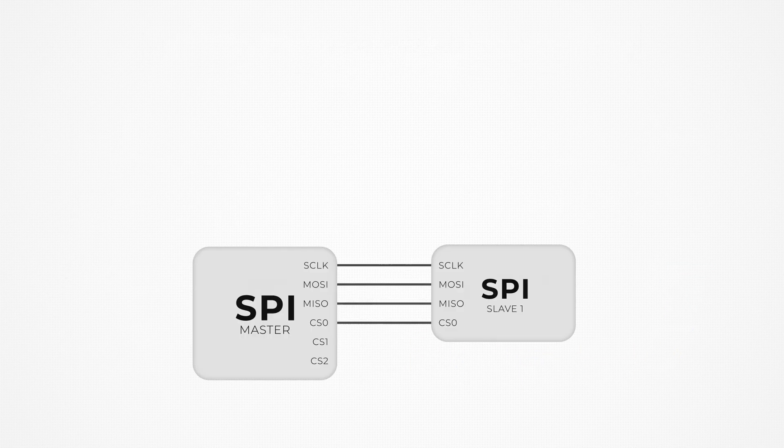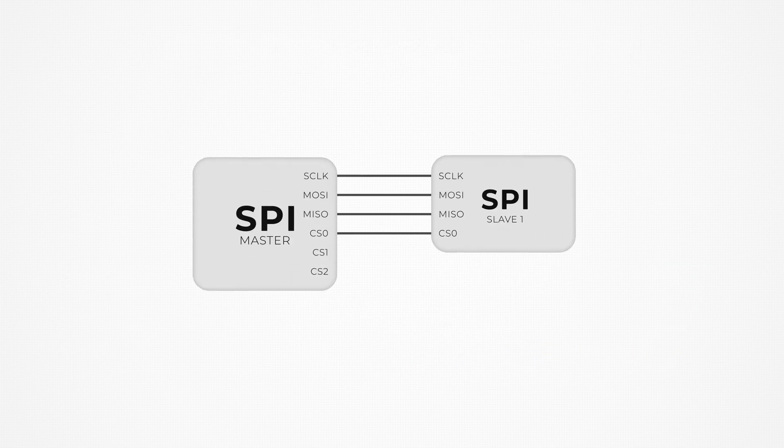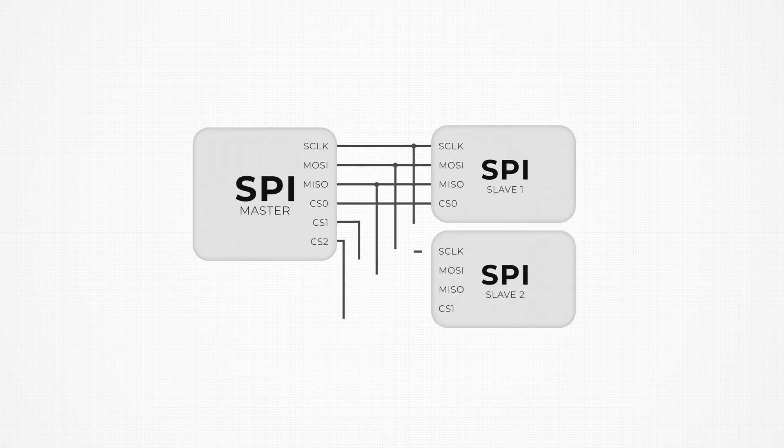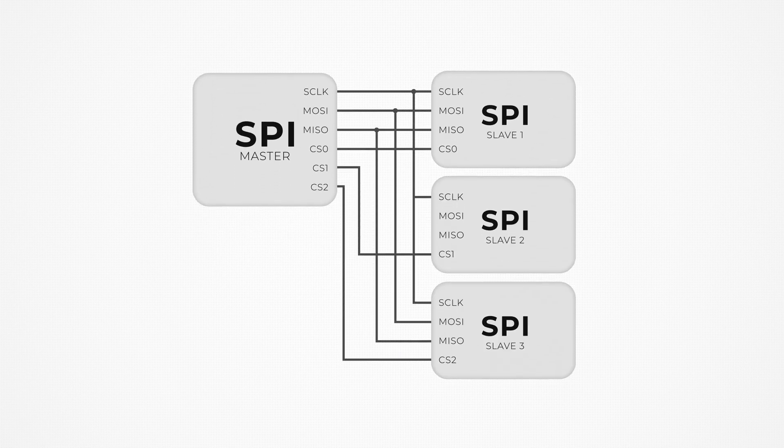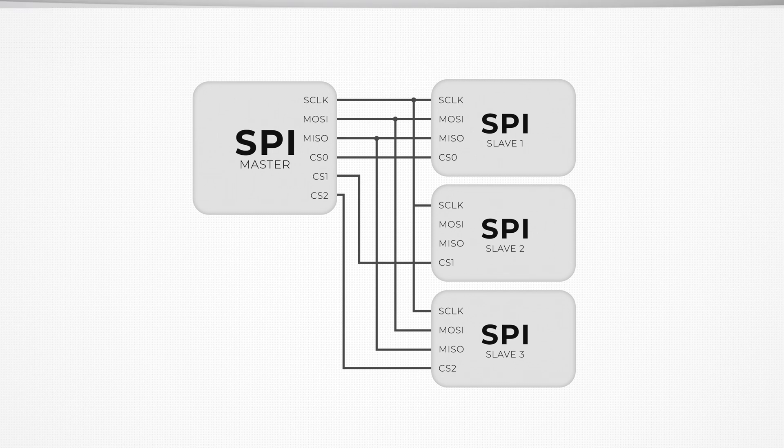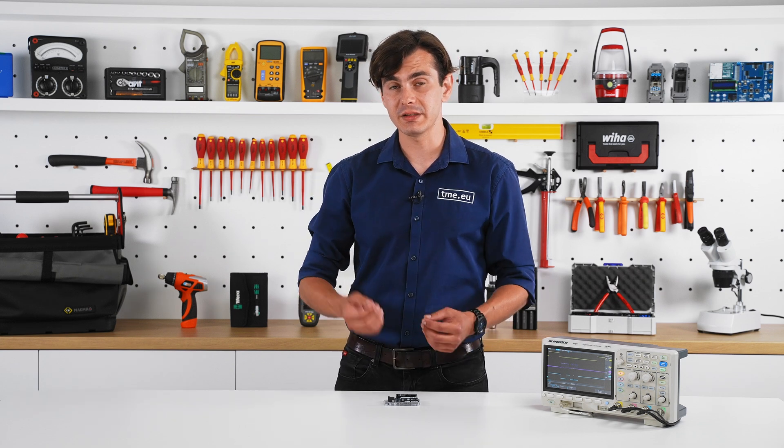Keep in mind that this interface can have just one controller and one or multiple peripherals, meaning one MCU controls other ICs and sensors. There exist three-wire or four-wire SPI configurations. The three-wire configuration has just one data line, while the four-wire has two. Today we are going to focus on the more popular one, the four-wire devices.